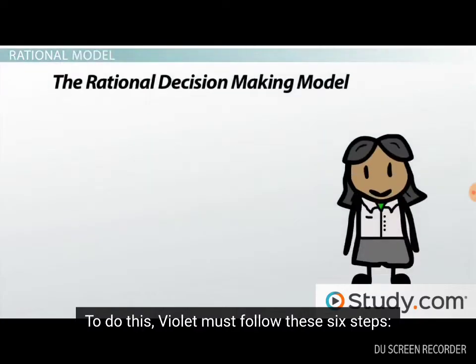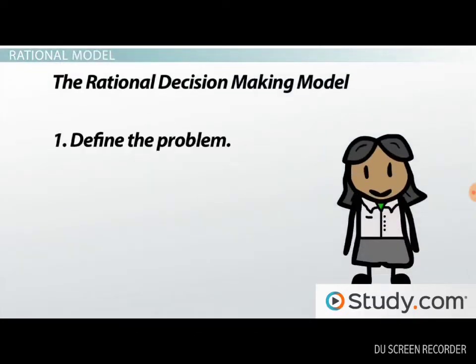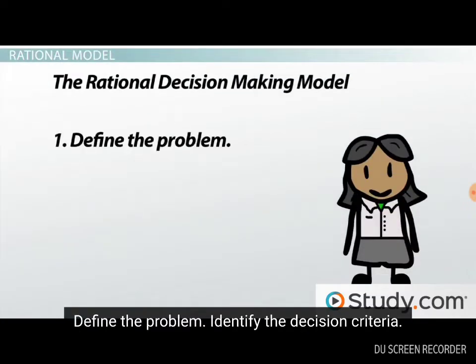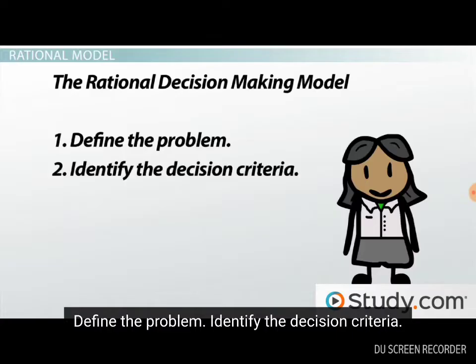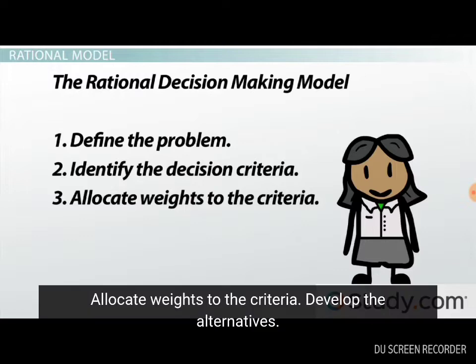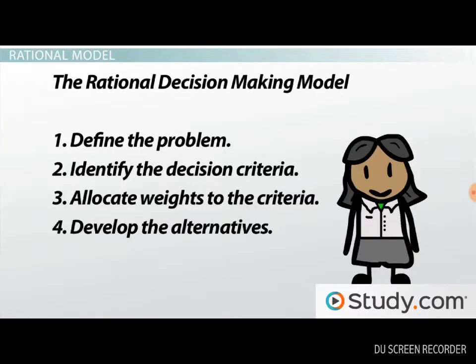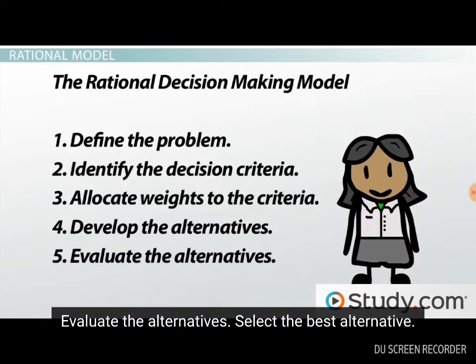To do this, Violet must follow these six steps: 1. Define the problem. 2. Identify the decision criteria. 3. Allocate weights to the criteria. 4. Develop the alternatives. 5. Evaluate the alternatives. 6. Select the best alternative.